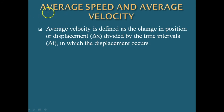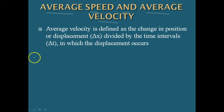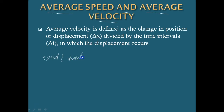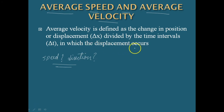Now let us learn what average speed and average velocity are. When an object is in motion, its position changes with time. But how fast is the position changing with time, and in what direction? To describe this, we have a concept called average velocity. Average velocity is defined as the change in position or displacement divided by the time interval in which the displacement occurs.